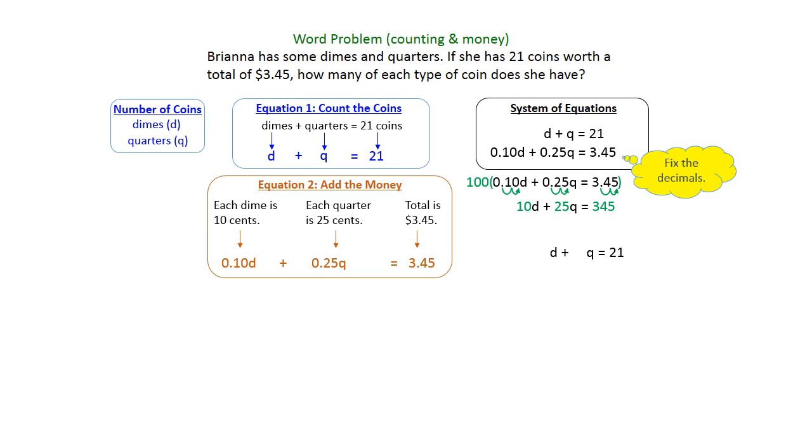So you've got your D plus Q equals 21, and your 10D plus 25Q equals 345. And we're going to make some opposites here. We're going to make the D's opposite, so we're going to swap the numbers. There's an imaginary 1 in front of the D on the top, and there's a 10 in front of the D on the bottom. So go ahead and swap those.